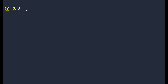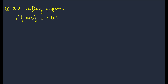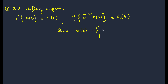Then the second shifting property: if L inverse of F(s) is f(t), then L inverse of e^(−as)·F(s) equals g(t), where g(t) = f(t − a) if t > a, and g(t) = 0 if t < a. Kindly try to prove this one after reviewing the corresponding Laplace transformation lecture.